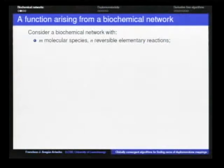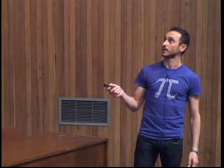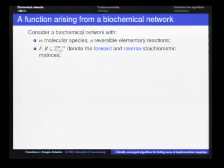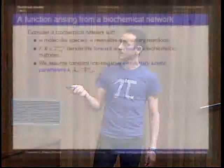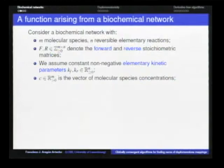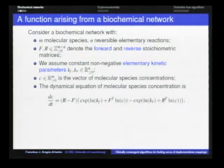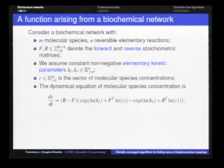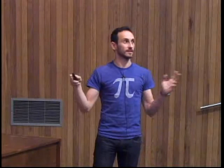In general, things are not so easy — we won't just deal with water, hydrogen, and oxygen. We will have n molecular species and m reversible elementary reactions. F and R denote the forward and reverse stoichiometric matrices. We assume constant non-negative kinetic parameters. The dynamical equation can be written using exponential notation, which is exactly the same as before but using products raised to the power defined by the stoichiometric matrices. We transform this to a logarithmic scale by setting x equal to the logarithm of c, giving a function f with better properties.